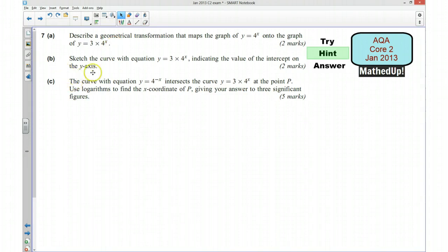Part B says sketch the curve with this equation indicating the value of the intercept on the y-axis. So think about what the x coordinate is going to be when the curve is going through the y-axis and what might the general shape of this graph be.